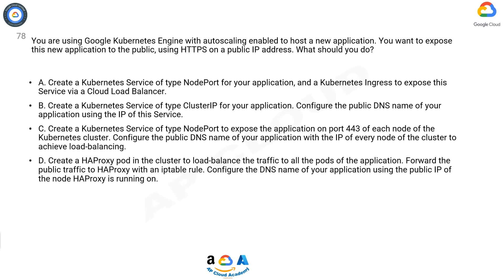B: Create a Kubernetes service of type ClusterIP for your application. Configure the public DNS name of your application using the IP of this service.